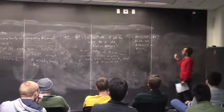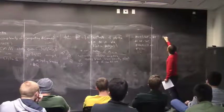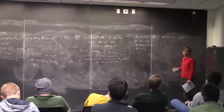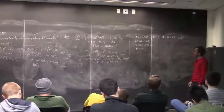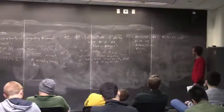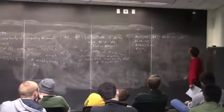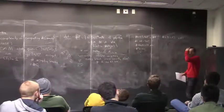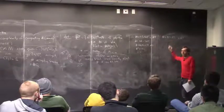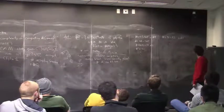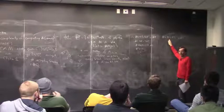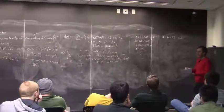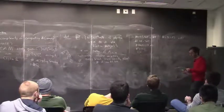Let me tell you more problems in sharp P. Number of cycles: given a directed graph, output the number of cycles. That's in sharp P, and it's also a very hard problem. The textbook shows that if you could solve this in polynomial time, you could solve Hamiltonian cycle in polynomial time. The decision problem — does a graph have a cycle — is easy, solvable in P. Sometimes the counting version of an easy decision problem can be very hard.